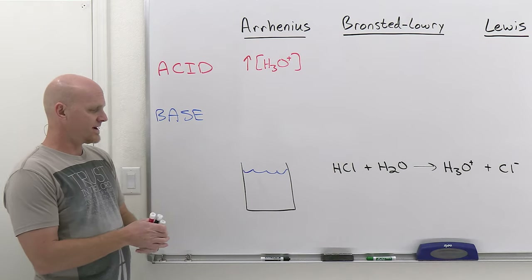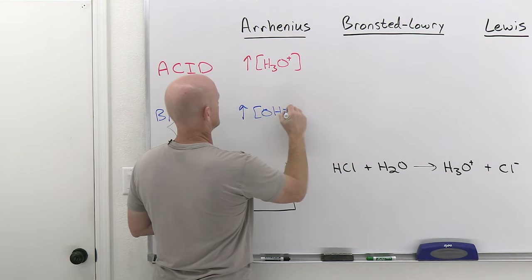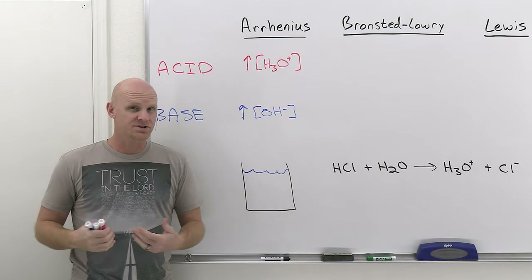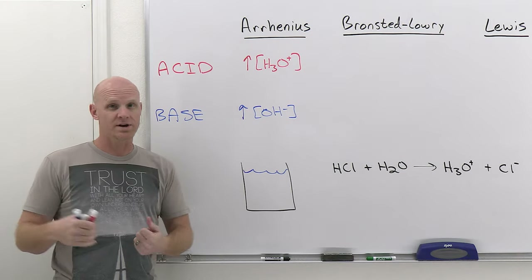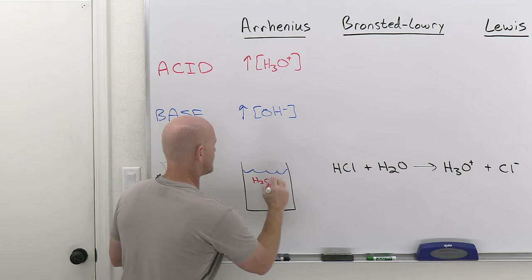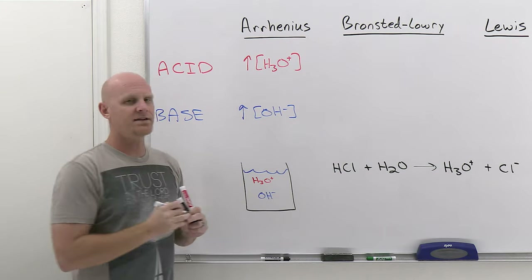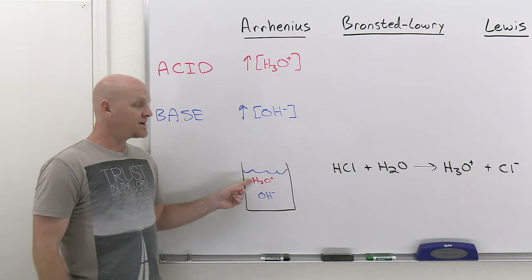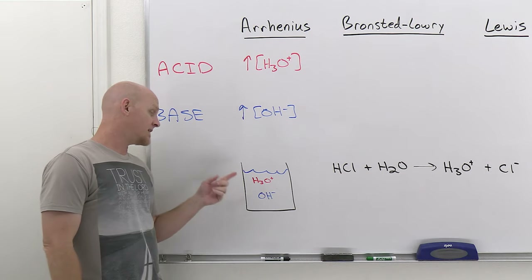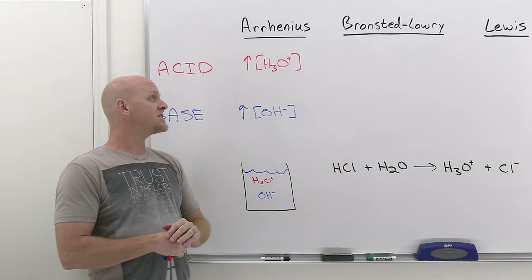For Arrhenius, bases increase the concentration of hydroxide instead. The most famous base is NaOH, sodium hydroxide, and it simply dissociates to produce OH- hydroxide ions. In an aqueous solution, you normally have an equal concentration of H3O+ and OH-. If you add an acid, you end up with more H3O+ than OH-; if you add a base, you end up with more OH- than H3O+. That's what Arrhenius considered.